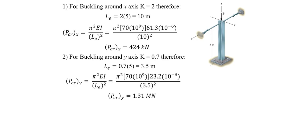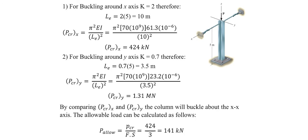In the second scenario, if the column buckles around the Y axis, then both ends are effectively fixed, so K equals 0.7. The effective length LE equals 0.7 times 5 equals 3.5 meters. Using the Euler equation, the critical load about the Y axis equals 1.31 meganewtons. Comparing both critical loads, the column will buckle about the X-X axis.